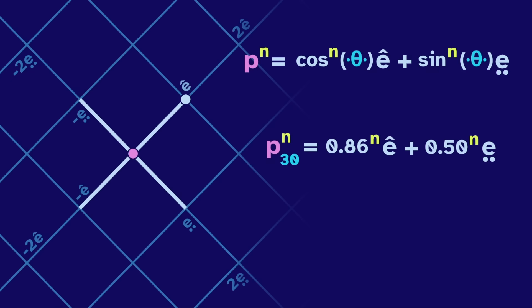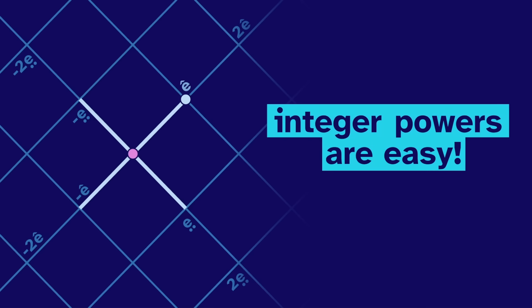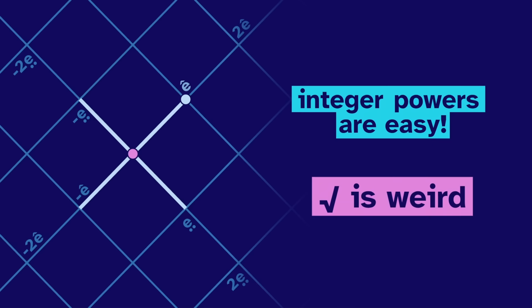Thanks to the e's, powers are easy. Well, at least integer powers. The square root is weird.